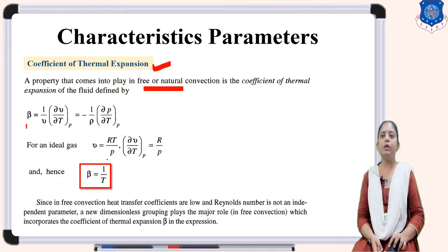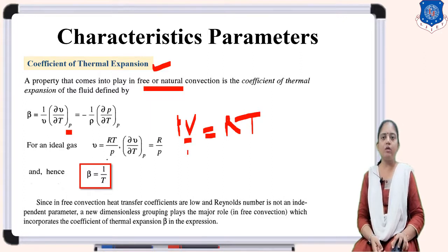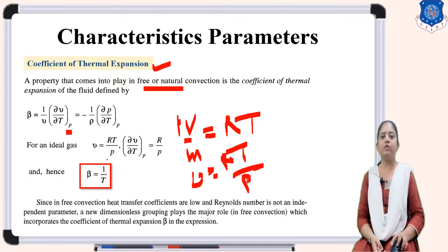Now how do we find it? Beta is equal to 1 upon small v into dv by dT, where pressure is constant. From the first law of thermodynamics, PV = mRT, so with constant mass, small v equals RT upon P.